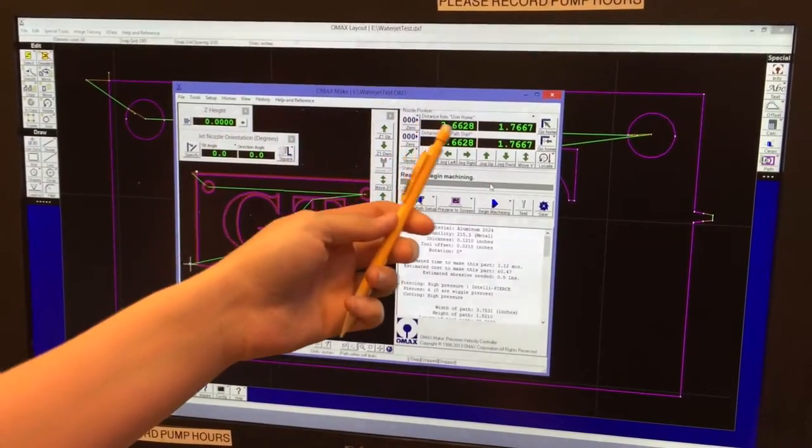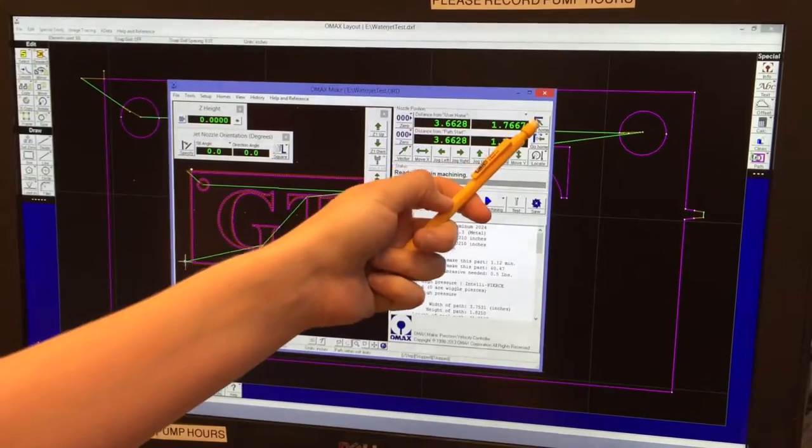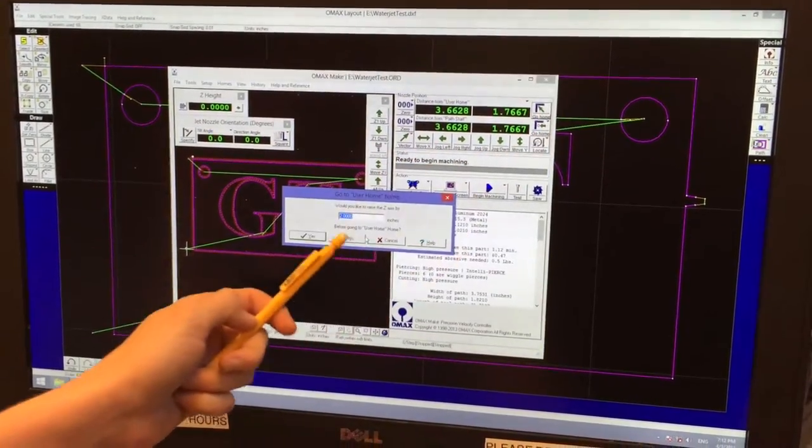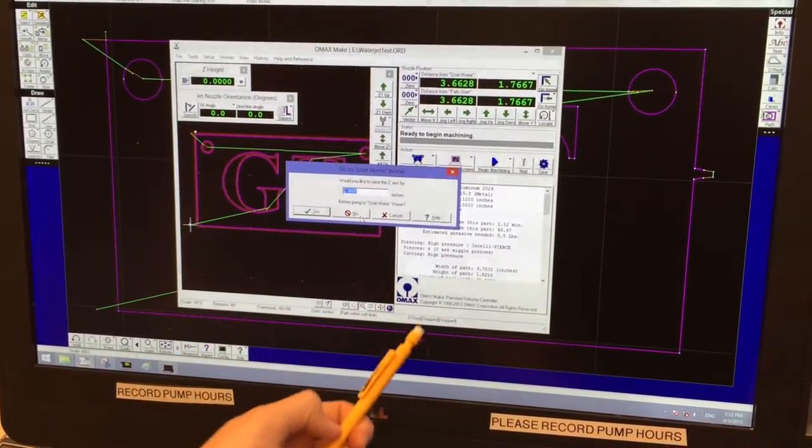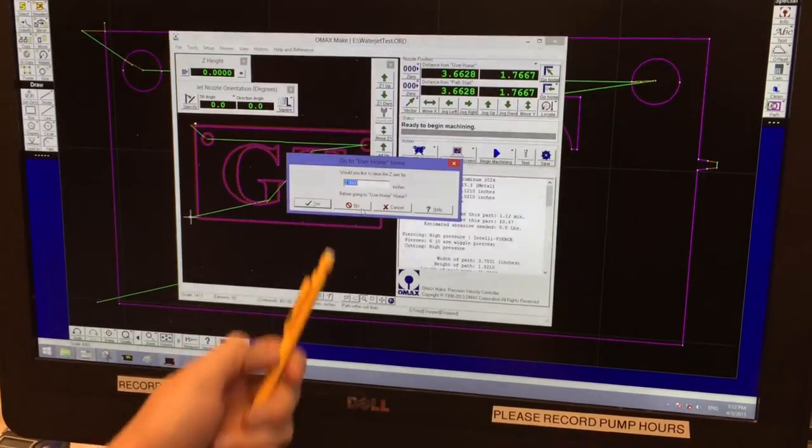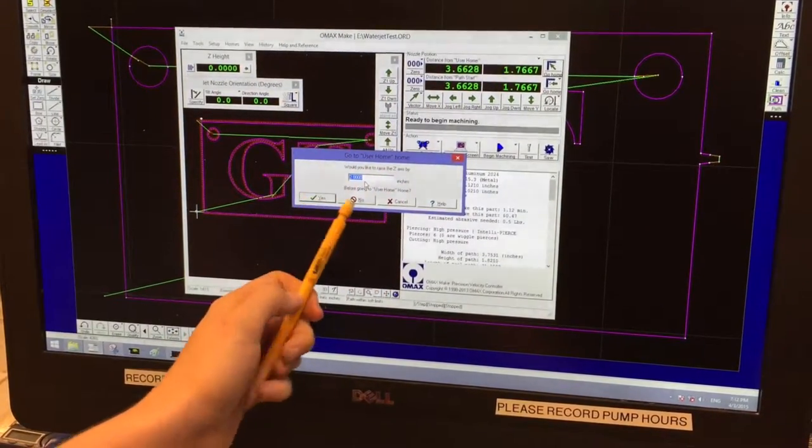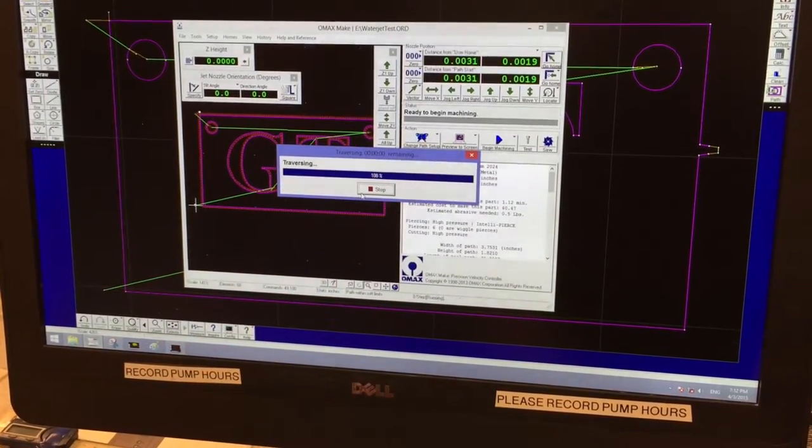So next, we need to make sure that the nozzle is back at the home position. So click go home for either of these because they're set to the same position. I do not want to raise the Z axis, but if you had any weights or anything in the way, you would want to instruct it to raise it and click yes. But in this case, I will click no. It traverses back to the original spot.